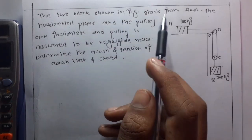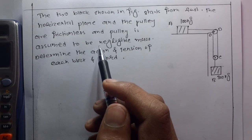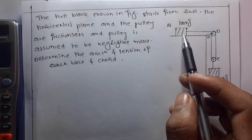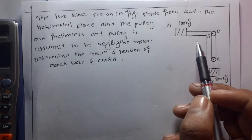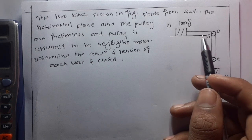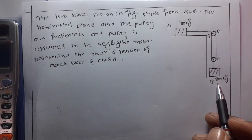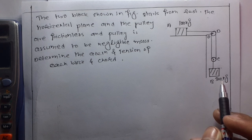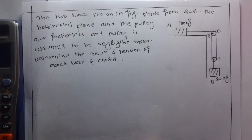The question shows two blocks starting from rest. The horizontal plane and the pulley are frictionless, and the pulley is assumed to have negligible mass. Determine the acceleration and tension of each block. Mass of block A is 100 kg placed on a horizontal frictionless plane, attached via a pulley. Block B, connected at point C, has a mass of 300 kg. We must find acceleration of block A, acceleration of block B, and tensions T1 and T2.